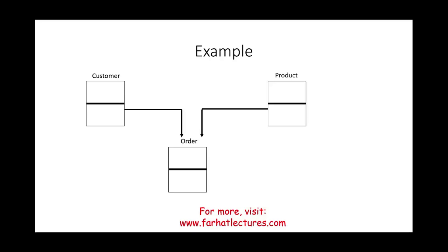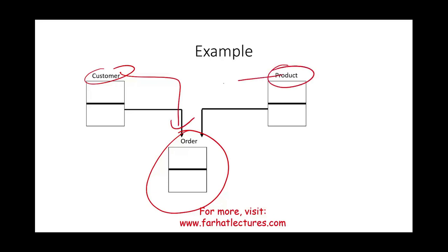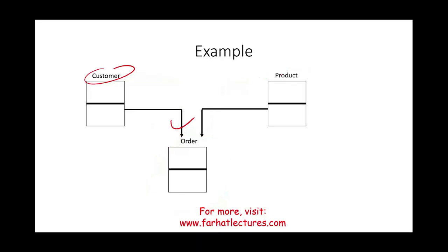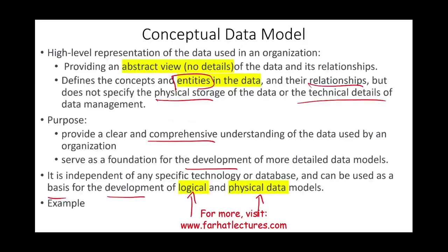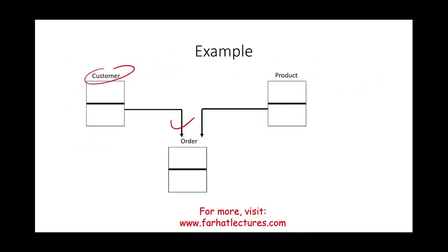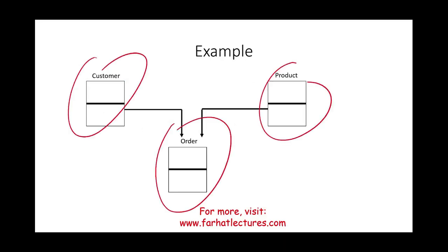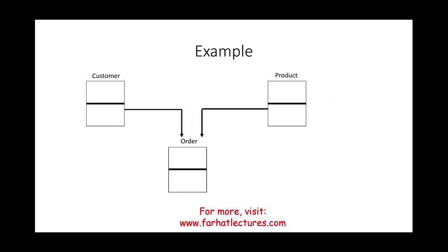What can you derive from this picture? We have an order — a sales order — and that sales order should have customer information and product information. The sales order could have other things on it as well. The customer, the product, and the order — we call these entities. We have one, two, three entities in this simple database example.